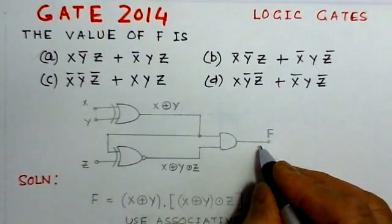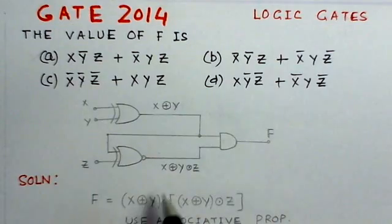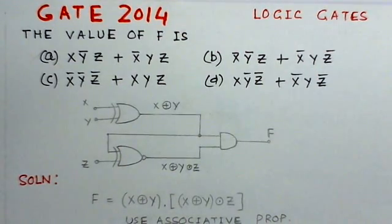And if we try to find out the output of the AND gate, this output will consist of: one input is X exclusive OR Y, ANDed with X exclusive OR Y exclusive NOR Z. So, this is the corresponding expression for F.